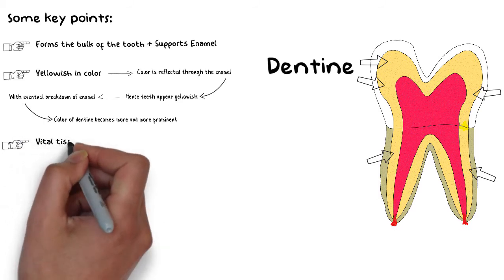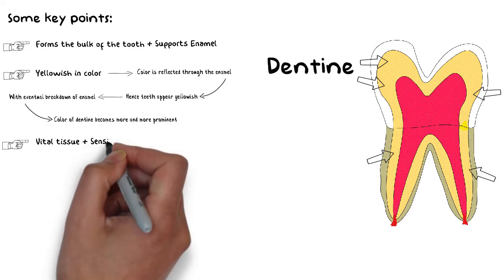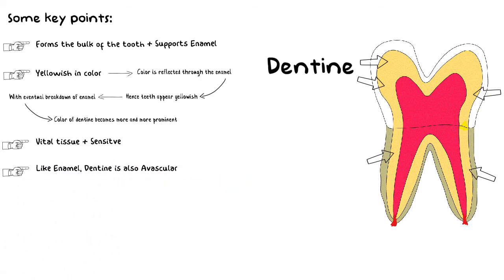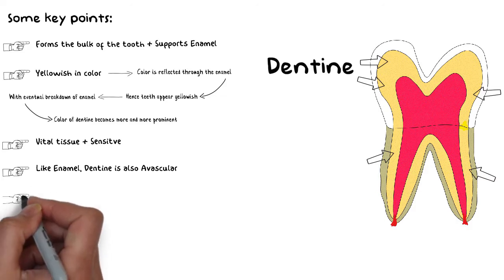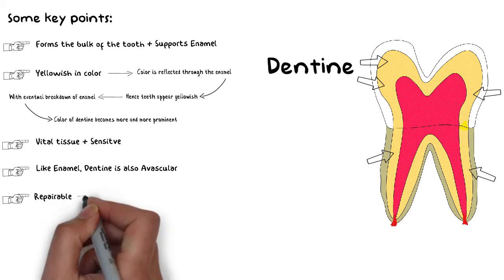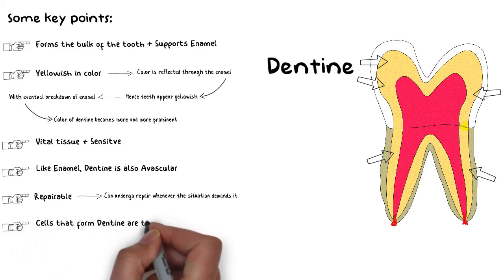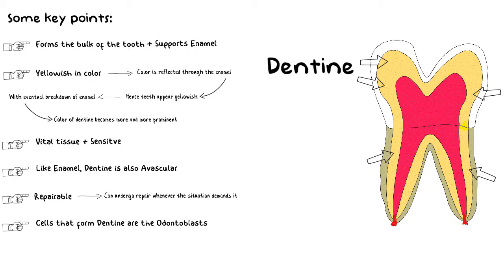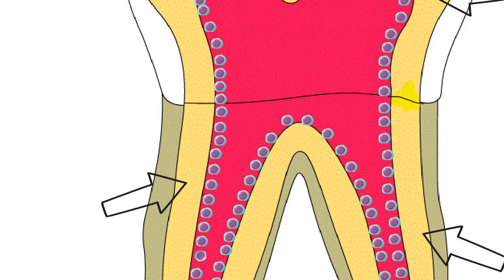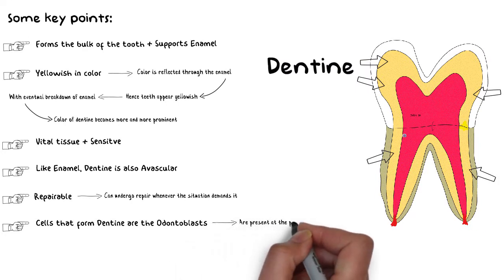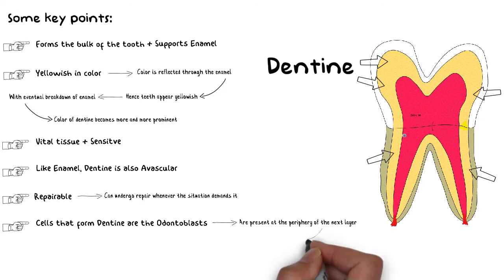Unlike enamel, dentine is a vital tissue and sensitive in nature, meaning it can sense pain and sensitivity. However, just like enamel, dentine is avascular — it does not have a blood supply. Dentine is also repairable, unlike enamel which is completely dead. This special ability is because of the cells that form dentine, known as odontoblasts. These cells are lined at the periphery of the dentine and can be stimulated to grow new dentine whenever the situation demands.